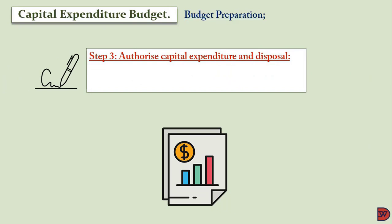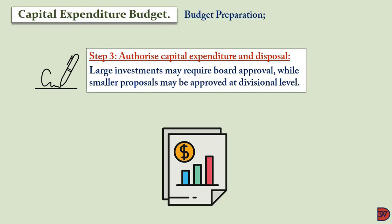The third step is authorizing the purchase or disposal of capital expenditure. Because of the value of capital investment, it will not lie at the level of divisional or lower-level managers — it would have to go to the board level to be approved. Expenditures of a certain limit, however, will lie within the powers of divisional management.